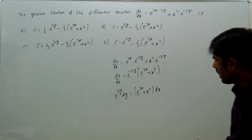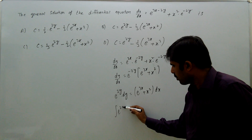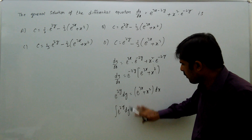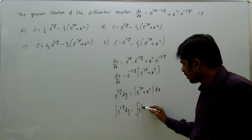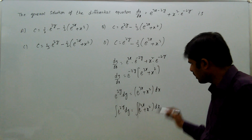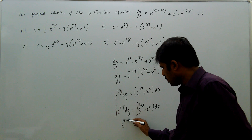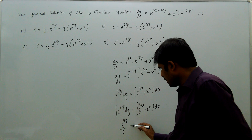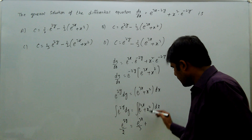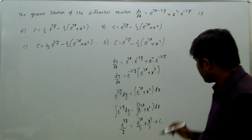Integrating both sides: ∫e^(2y) dy = ∫(e^(3x) + x²) dx. So e^(2y)/2 = e^(3x)/3 + x³/3 + c.